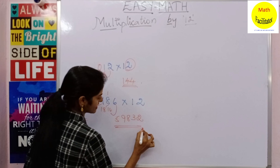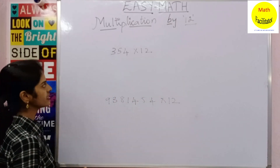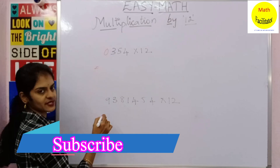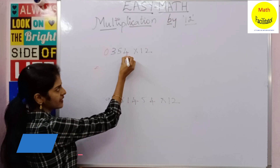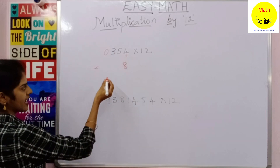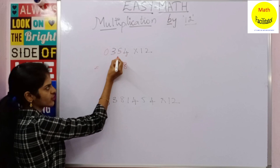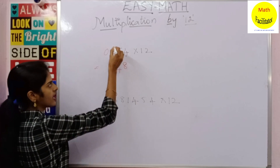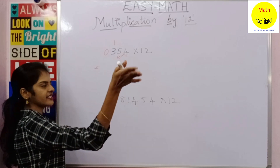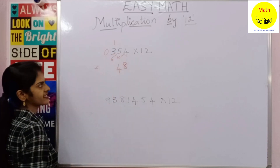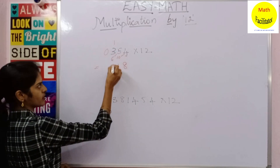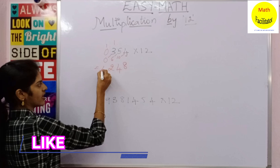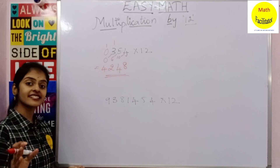Let's try another example: 354 × 12. First, write a 0 before the number. In the units place, double 4 to get 8. For the tens place, double 5 to get 10, then add 10 to 4 to get 14 — write 4 and carry 1. Double 3 to get 6, add 6 to 5 to get 11, plus 1 carried is 12 — write 2 and carry 1. Finally, double 0 to get 0, add 0 to 3 plus the 1 carried to get 4.